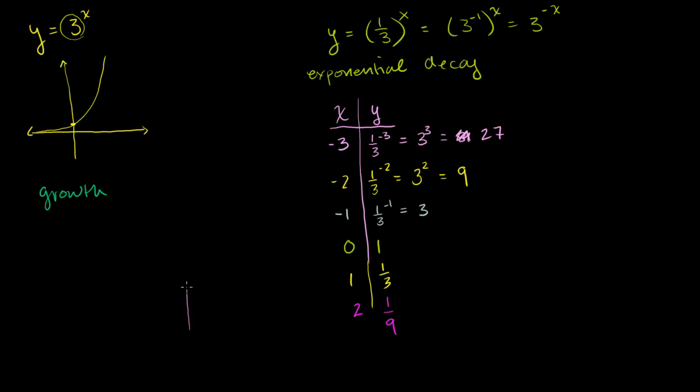I want to draw it reasonably neatly. All of these values are positive, because our base was positive. So let's say this is 10, 20, 30. And let's start at negative 3, negative 2, negative 1, 0, 1, 2.